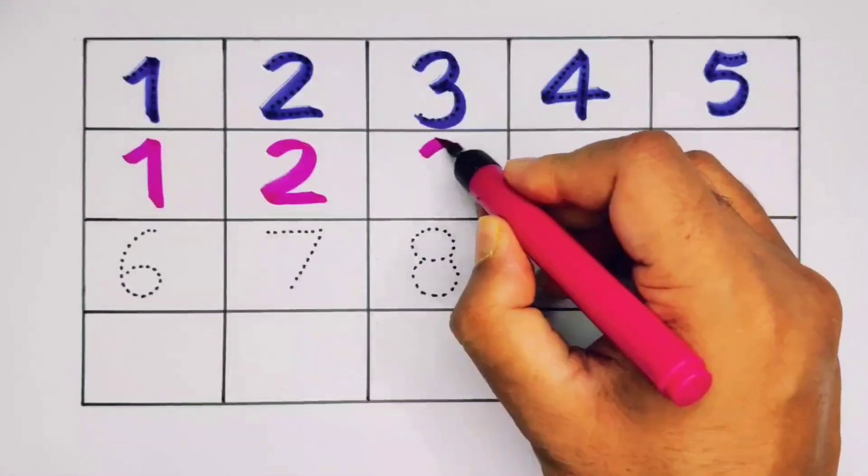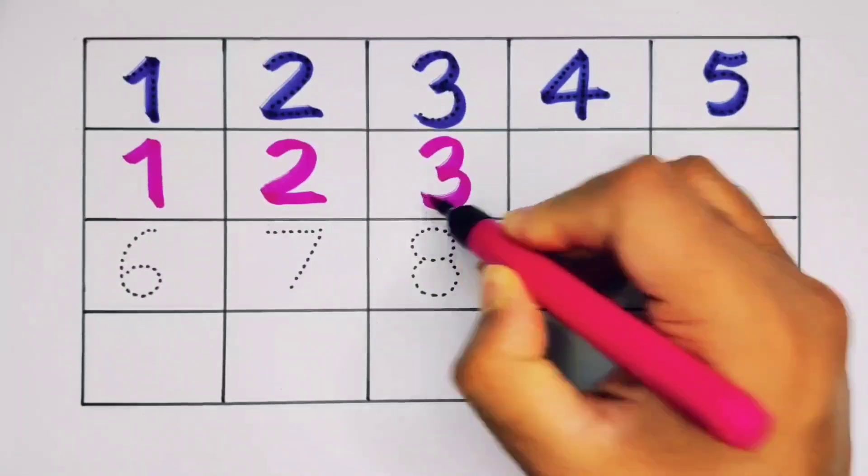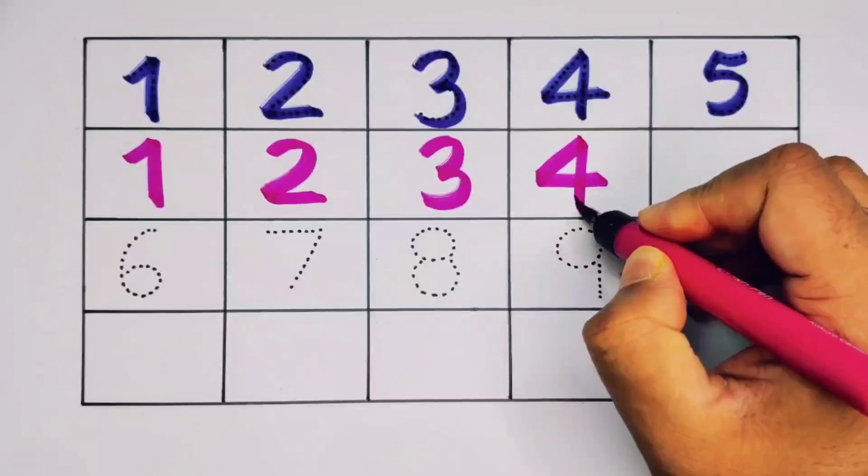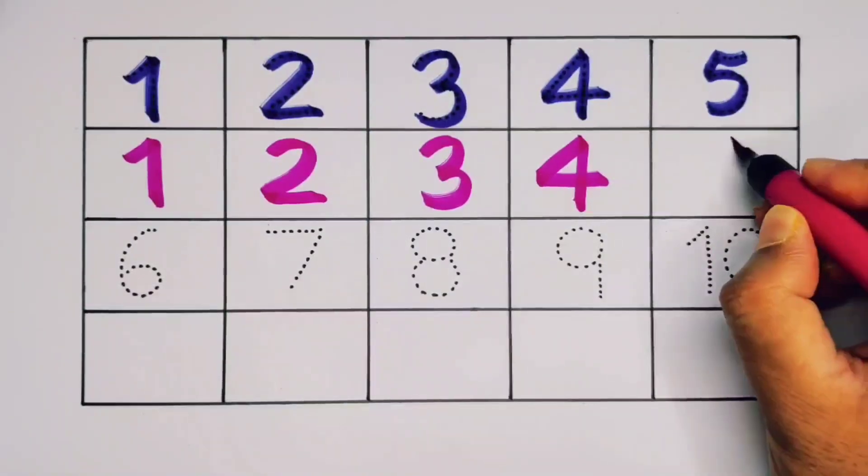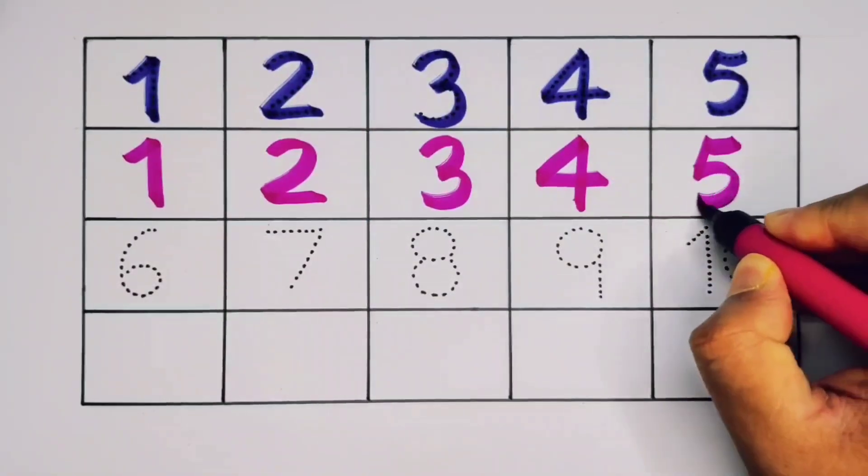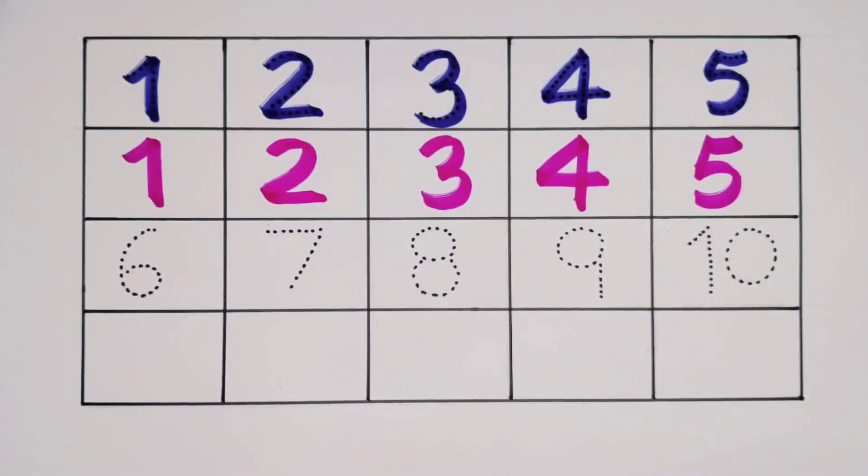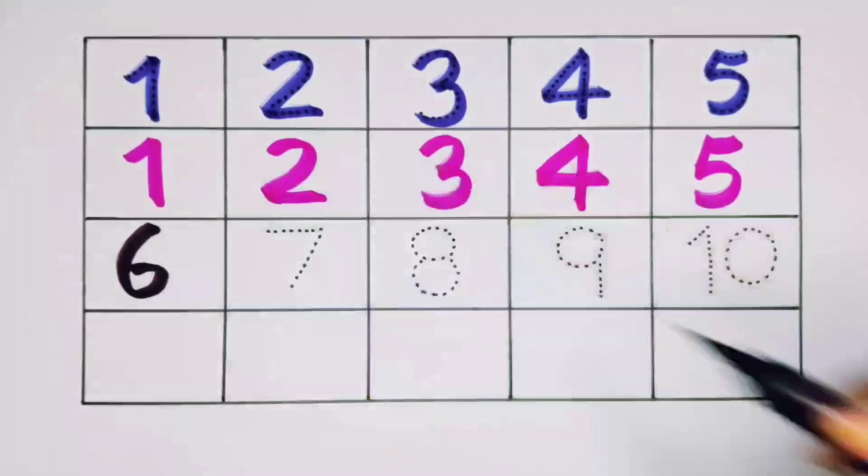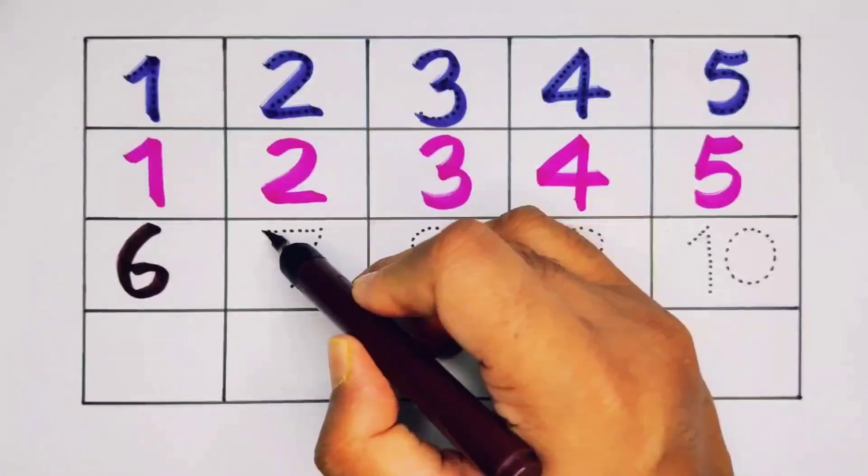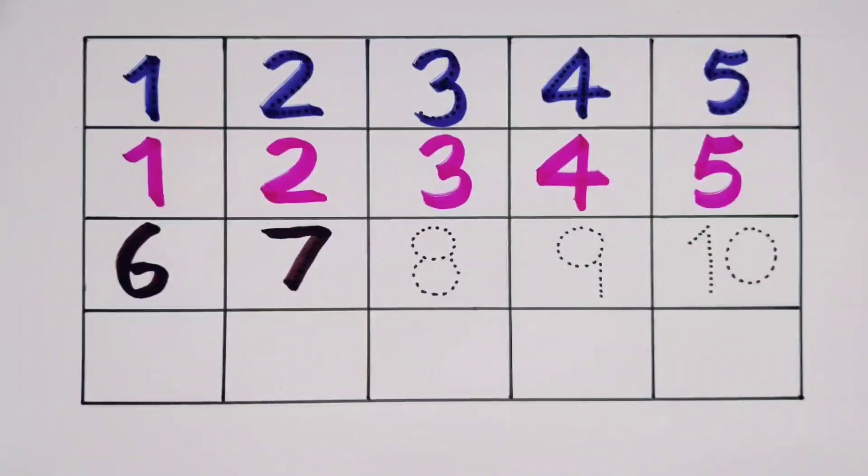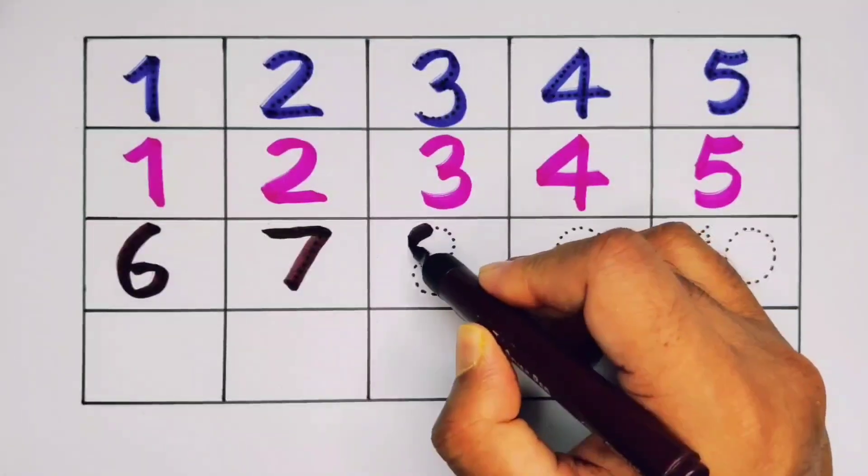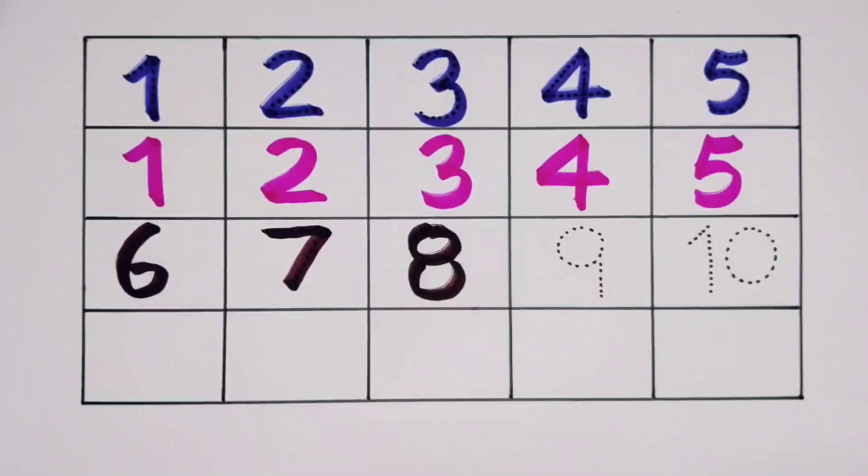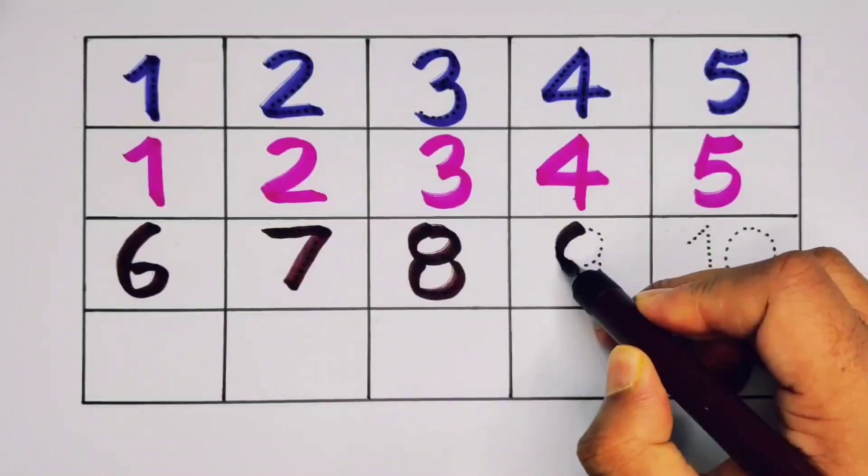Five, number five. One, number one. Two, number two. Three, number three. Four, number four. Five, number five. Now six, number six. Seven, number seven. Eight, number eight. Nine, number nine.